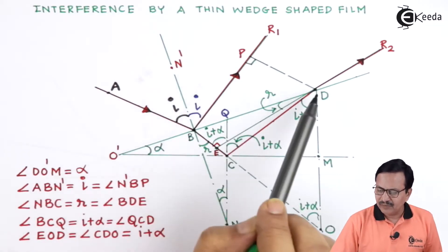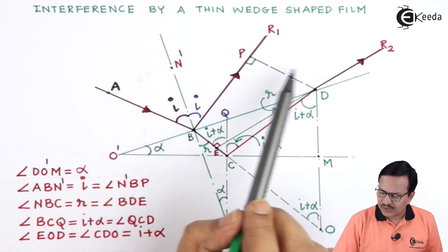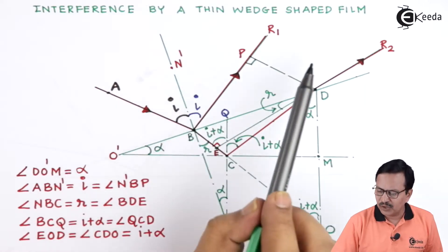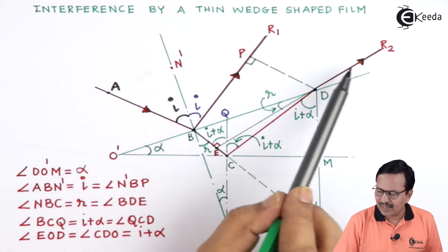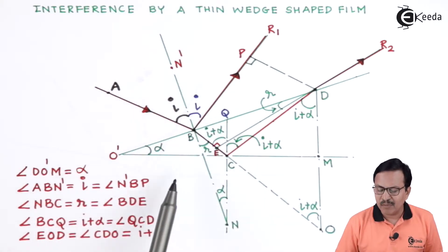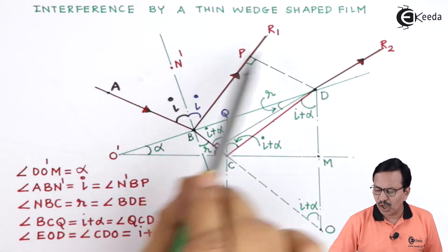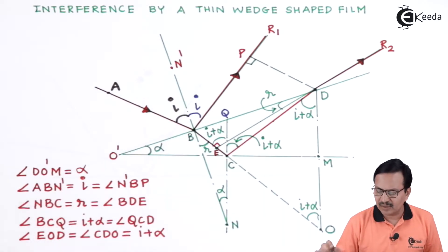We are trying to answer what is going to be the interference pattern produced by the reflected rays R1 and R2. Prior to that, let us consider some important parameters regarding the geometry of this figure.